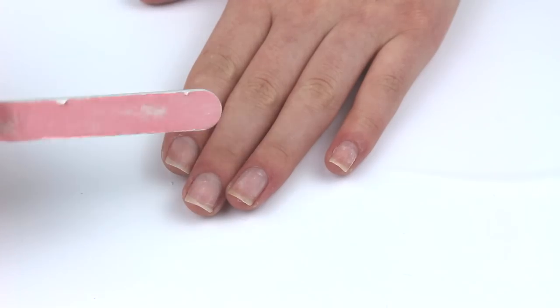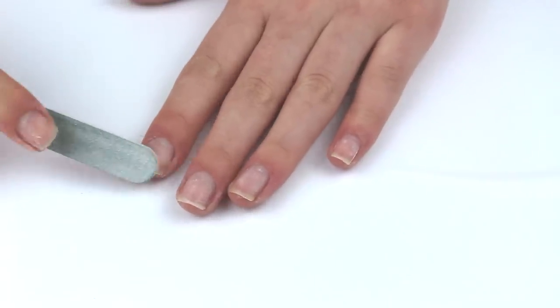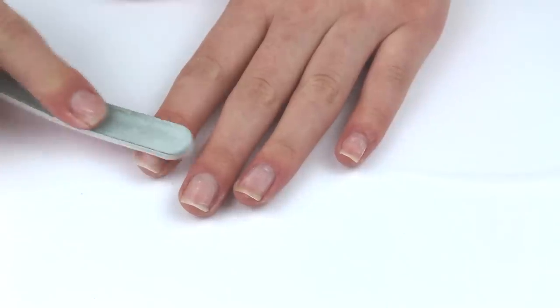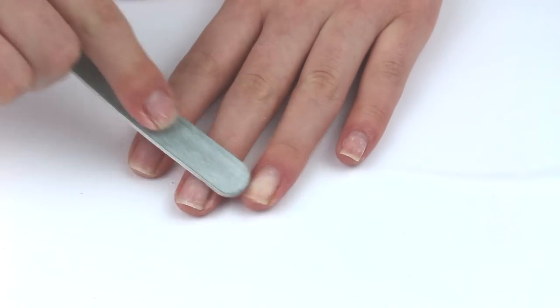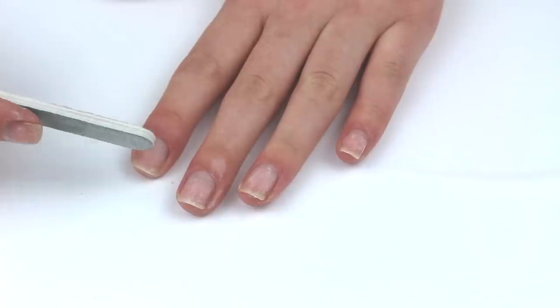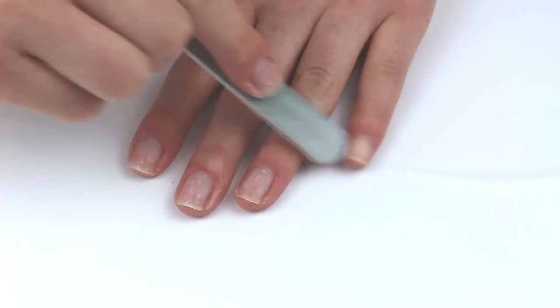So once I've filed them with the grey side of the file you then take the pink side and lightly buff every single nail to take the natural shine off the nail and prepare them for the gel manicure. Really lightly buff them. I've already buffed them a little bit as I buffed my old manicure off as well so I don't really need to do too much buffing but be really careful not to over buff your nails.